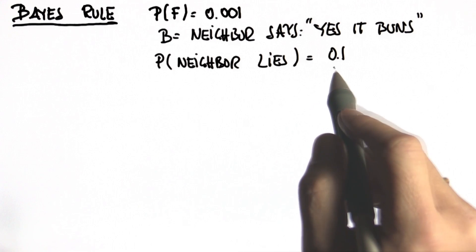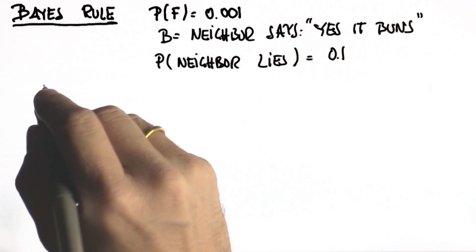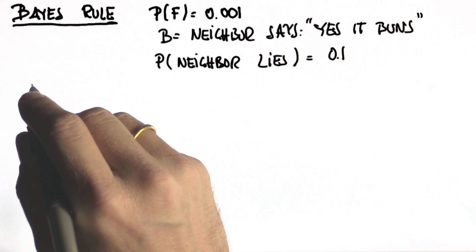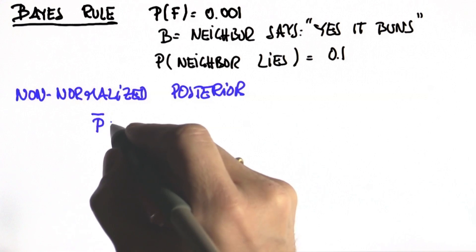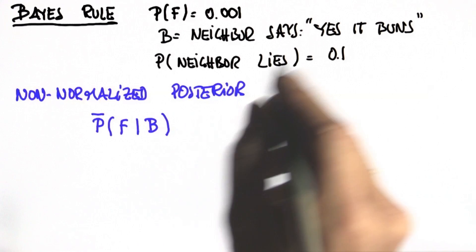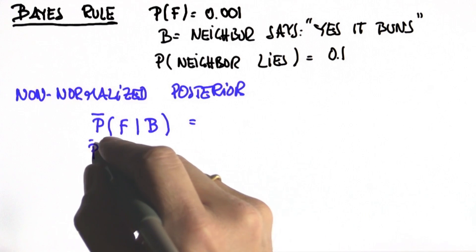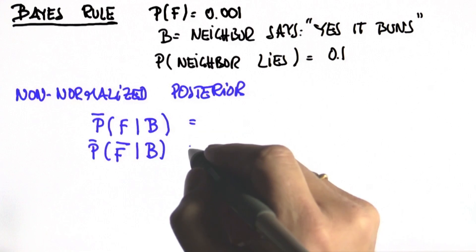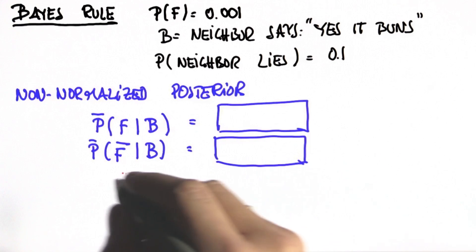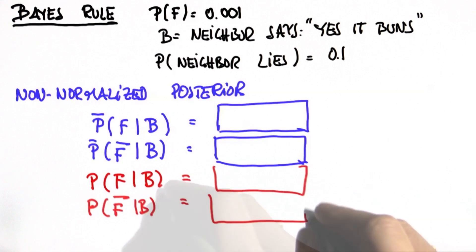But you know that the probability of this being a lie is 0.1. So in applying Bayes rule, I'd like to first compute the non-normalized posterior, P-bar (bar stands for non-normalized), of fire given the neighbor just called, and the same for the opposite event of no fire given the neighbor just said yes it burns. After you've done this, I'd like you to compute the normalized values that have to add up to one. Please enter all four values for this homework assignment.